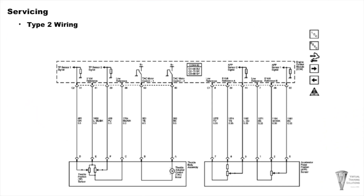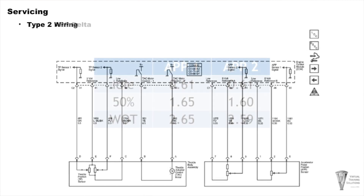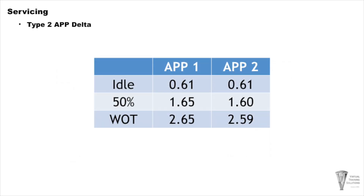That throttle position feedback is separate from the input coming from your APP module. Your APP module simply feeds an input to your engine control module, and then the engine control module figures out what to do with that and commands your throttle actuator control to do its job. In this two-wire setup at the APP, both potentiometers start low and both go up in voltage as you step on the gas.